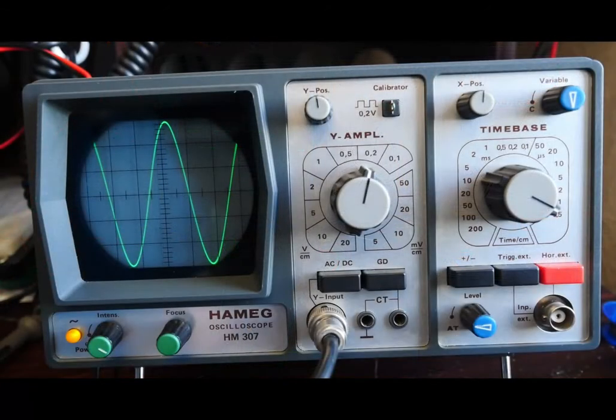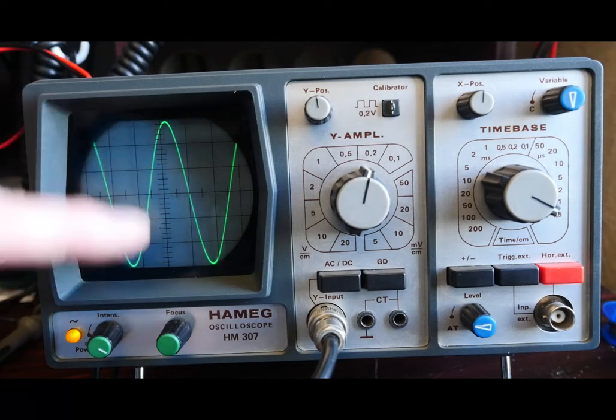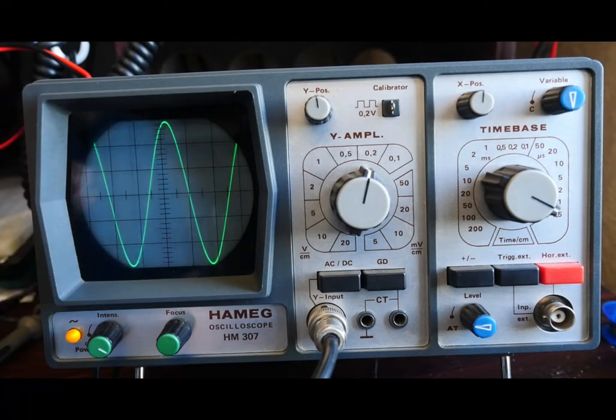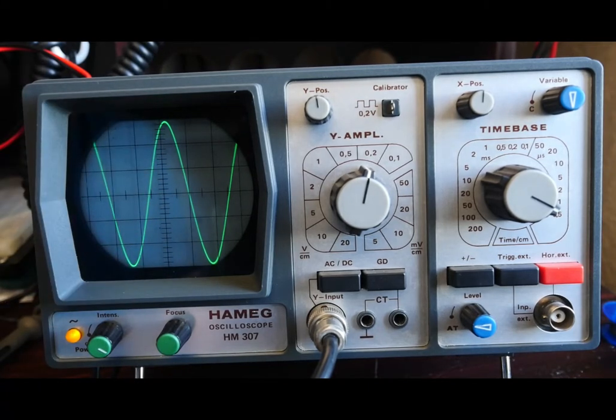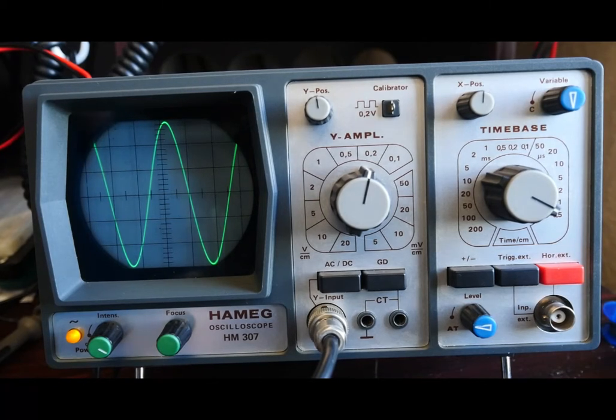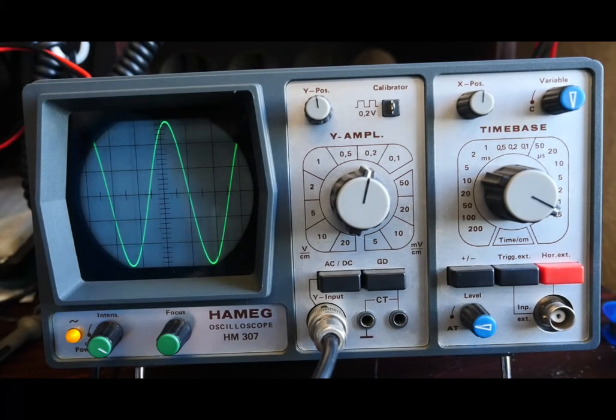Now I've got the scope attached to the signal generator, and currently it's displaying a signal of 2 megahertz, which is well within the scope's capabilities. I've adjusted the output voltage of the signal generator so that we're exactly six divisions across the whole screen, or plus or minus three. To identify the minus 3dB point, we're looking for 0.707 to be precise.